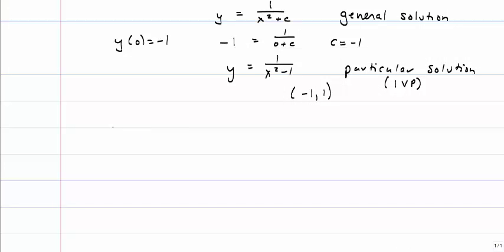Let's change the initial condition. Let's say my initial condition instead was y of 2 is equal to 1. If I use that in my general solution, I find that C is equal to negative 3, and so my particular solution is this.